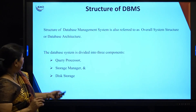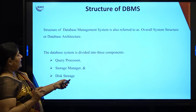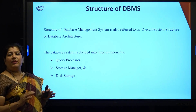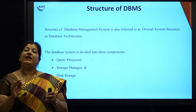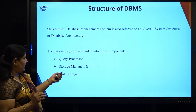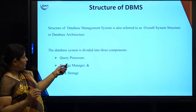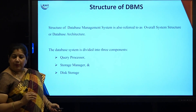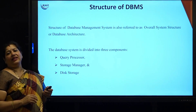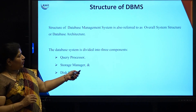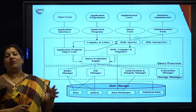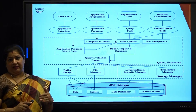Let us first see the basic components of the structure. The structure of the DBMS is also known as the DBMS architecture, which is divided into three components: the query processor, storage manager, and the disk storage. Let us look into this architecture diagram to have a clear idea of what these categories are.